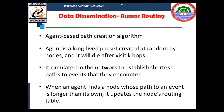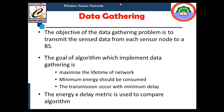Another dissemination approach is RUMOR routing, an agent-based path creation algorithm. Agents circulate in the network to establish the shortest path to events they encounter. An agent is a long-lived packet created at random by nodes and dies after visiting k hops based on hop count. When an agent finds a node whose path to an event is longer than its own, it updates that node's routing table. In data gathering, the main concern is transmitting sensor data from each sensor node to a base station, with the main goal of maximizing network lifetime, minimizing energy consumption, and minimizing transmission delay.